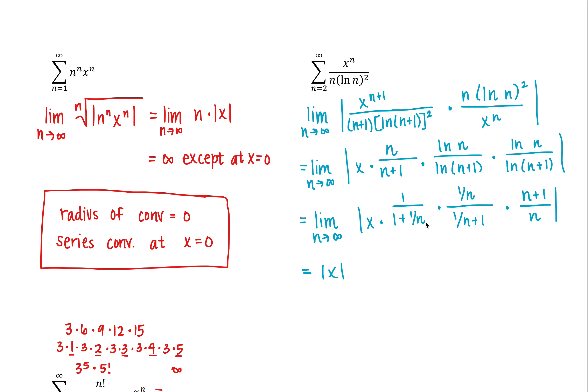Now for the ratio test to show absolute convergence, this has to be less than 1. So that gives us our radius of convergence. It's just 1.